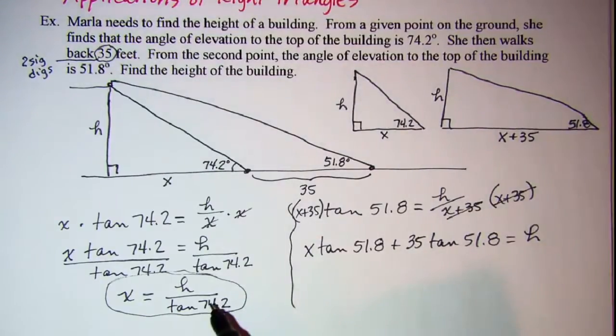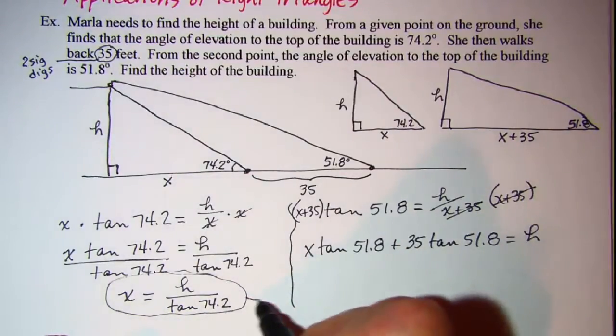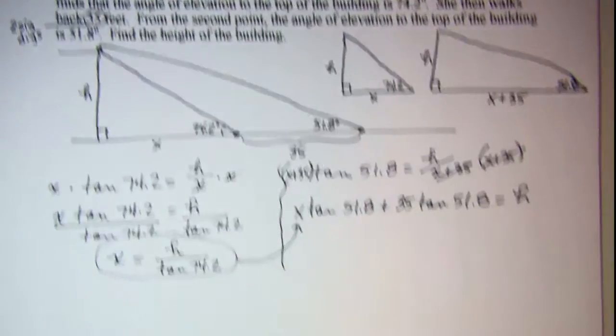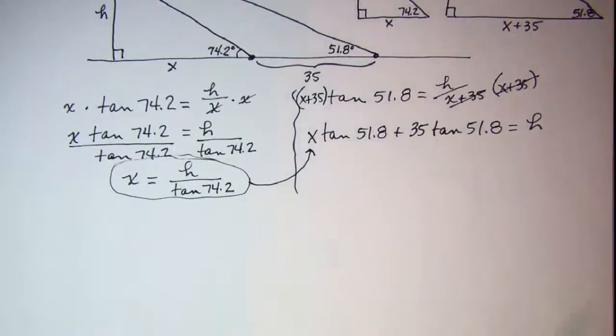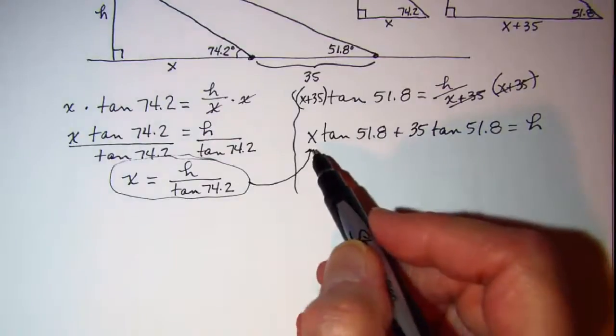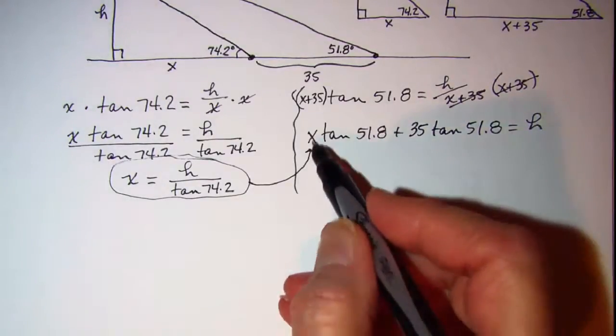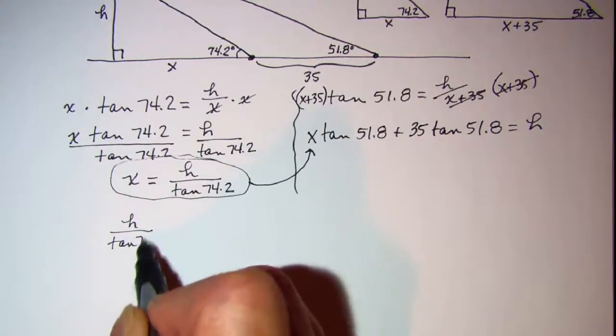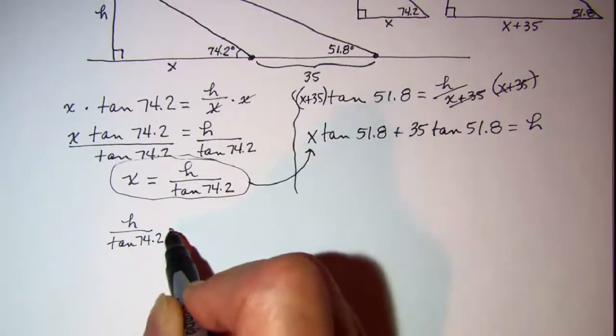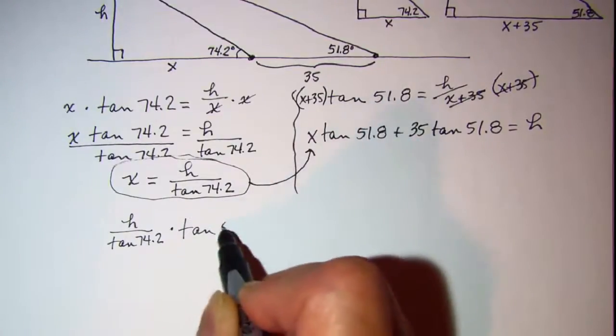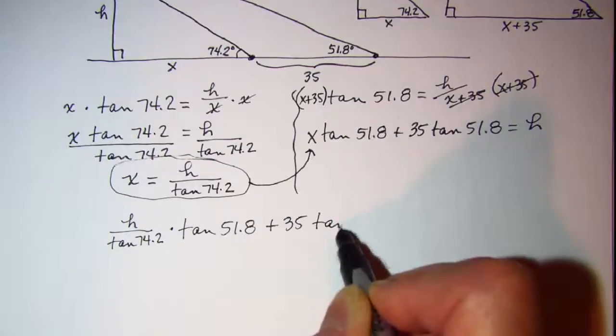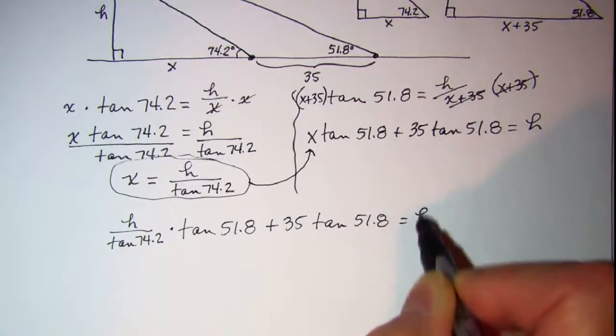Alright, now I'm going to substitute this expression in here in place of X. So that will give me H over tangent 74.2 times the tangent of 51.8 plus 35 tangent 51.8 equals H.